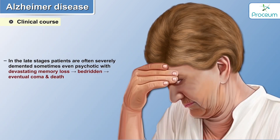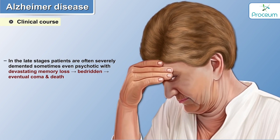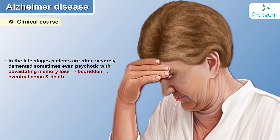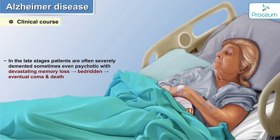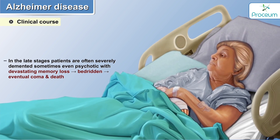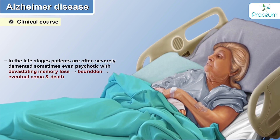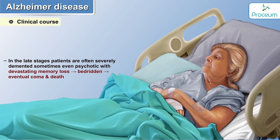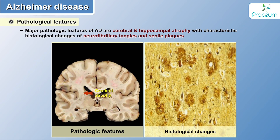In the late stages, patients are often severely demented, sometimes even psychotic, with devastating memory loss which pushes them to be bedridden, with eventual coma and death, which commonly occurs about 8 to 10 years after clinical diagnosis. The cerebral and hippocampal atrophy with characteristic histological changes of neurofibrillary tangles and senile plaques are the major pathological features of Alzheimer's disease.